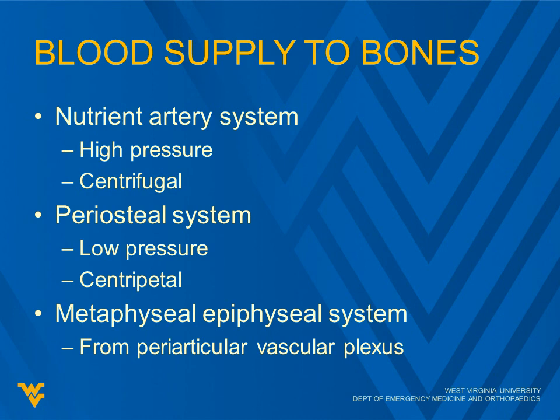Blood supply to bones is a three-part system. The nutrient artery system, which is high pressure, comes from the inside out — that's centrifugal — and that's more predominant in mature bone.